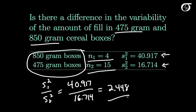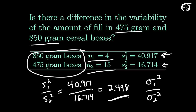Now this is our point estimate of the quantity sigma 1 squared over sigma 2 squared, the ratio of the population variances. Based on this, it might seem that the 850 gram boxes do have a little bit greater variability. But this point estimate only tells us so much, and we would like to investigate this further, perhaps with a confidence interval.